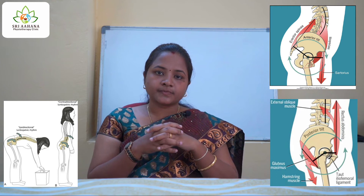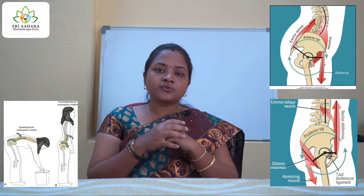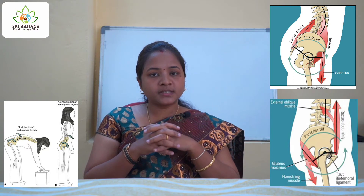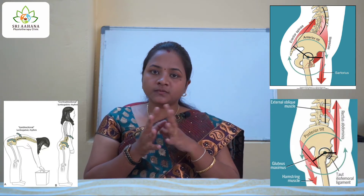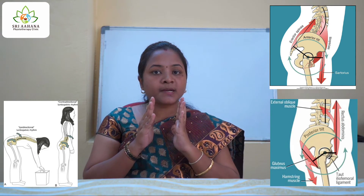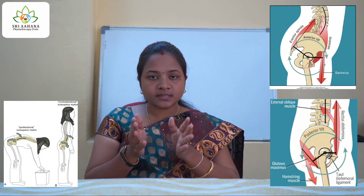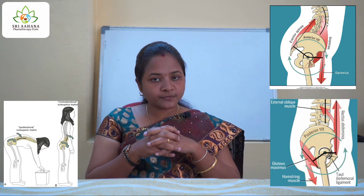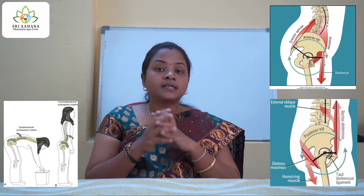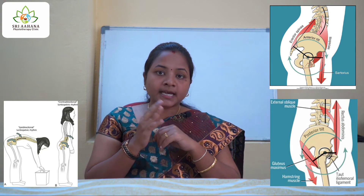Anteriorly, the hip flexors go into concentric contraction, which provides leverage to the range of motion. The key point to remember is: to bring about trunk flexion, the first part that acts is the lumbar spine, and the second one is the pelvis.